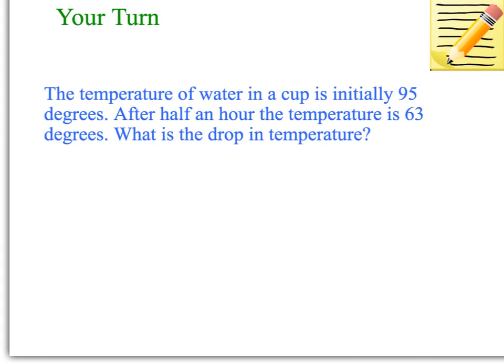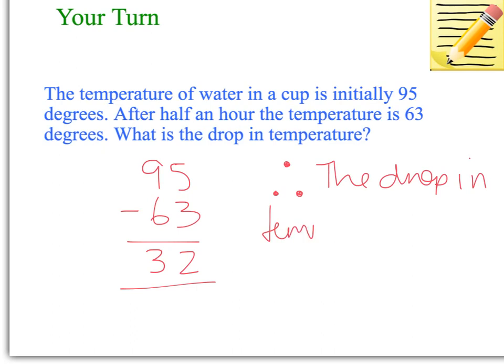What we need to do here is just take 63 away from 95. It's as easy as that. We're just working out the drop in temperature, so it's just the difference. So 95 take away 63 is 32. So it drops by 32 degrees to 63. So the drop in temperature is 32 degrees.